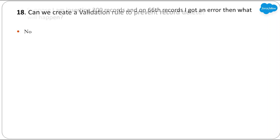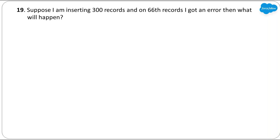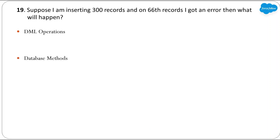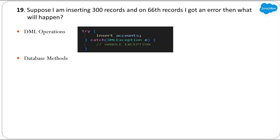Next question: suppose I am inserting 300 records and on the 66th record I get an error — will our records be inserted or will all fail? There are two approaches in Salesforce to perform DML operations: DML statements and Database methods. If you are using DML statements (e.g., `insert recordCollection`), it will roll back the whole transaction and nothing will be inserted — DML statements do not support partial operations, so any error causes a full rollback.